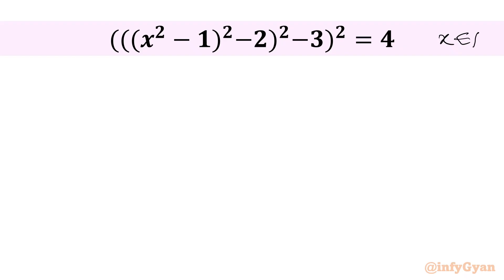If we check how many solutions there are: x squared raised to the power 2 gives 4 solutions. Again power 2 gives 8 solutions. Again power 2, there will be 16 solutions. Now we have to check how many are real. So let's get started with our substitution straight away.